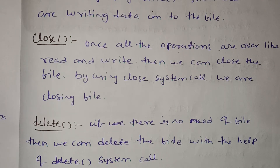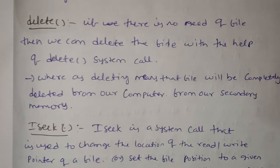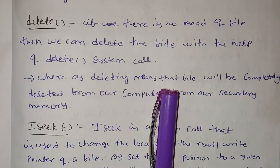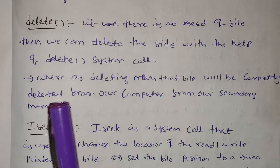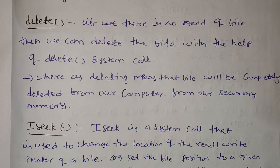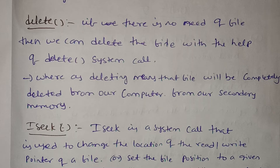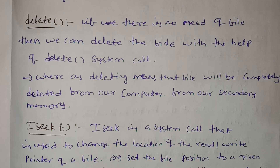If there is no need of a file, then we can delete the file with the help of the delete system call. Deleting means that file will be completely deleted from our computer, from our secondary memory — from the hard disk. So if the file is no longer needed, we delete it and free up the memory.